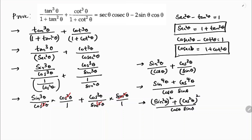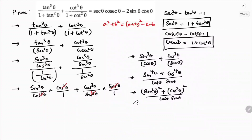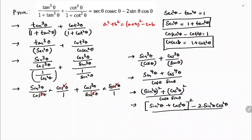Now we have A² + B² in the numerator. The identity for A² + B² is (A + B)² − 2AB. Here A = sin²θ and B = cos²θ, so the numerator becomes (sin²θ + cos²θ)² − 2sin²θ·cos²θ, all divided by cosθ·sinθ.